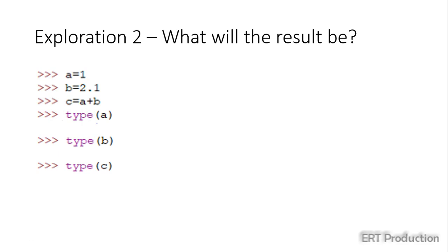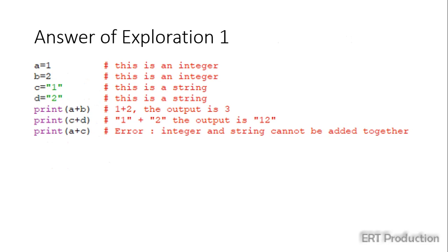Here is the answer of exploration 1. Since the data in a and b are integers, when we add them together, it just likes the normal calculations. Hence, 1 plus 2 is 3.